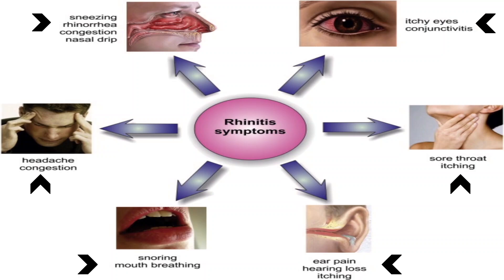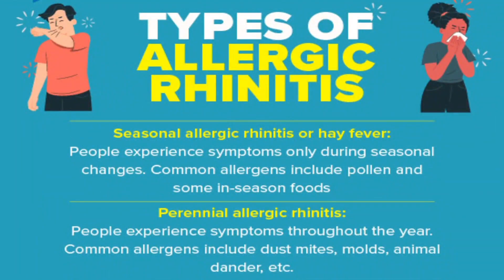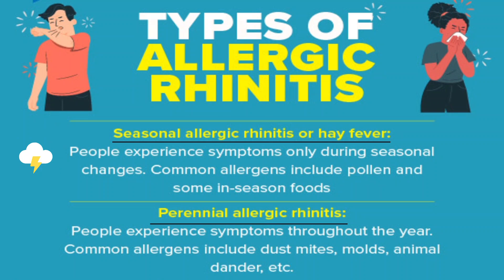Allergic rhinitis is mainly of 2 types. The first is seasonal allergic rhinitis, also known as hay fever, where people mainly experience symptoms only during changes in the seasons, commonly caused by pollen. The second is perennial allergic rhinitis — also called non-seasonal or atopic rhinitis — where people experience symptoms throughout the year, commonly due to dust mites, molds, and animal dander.